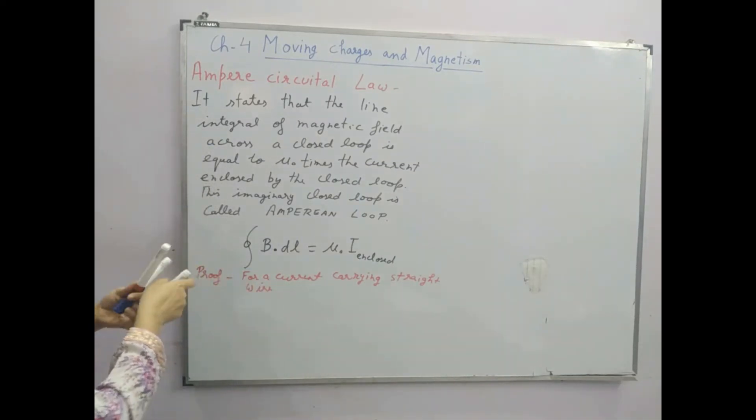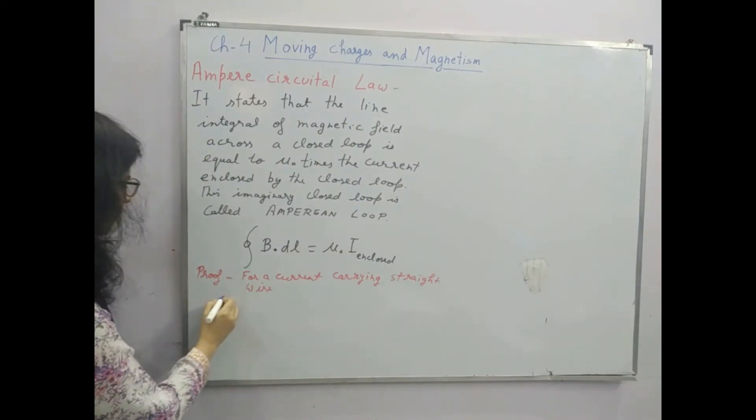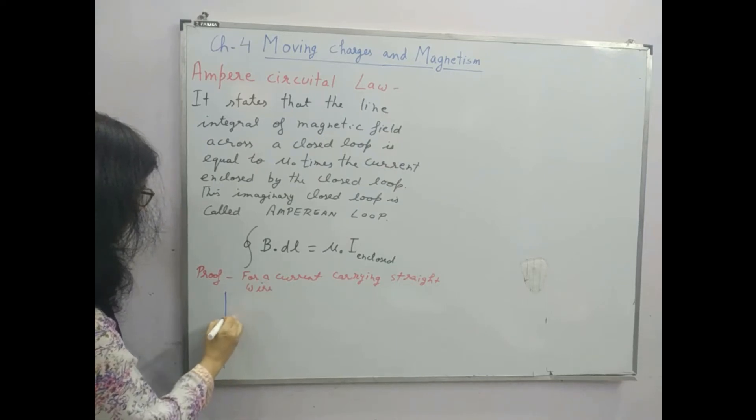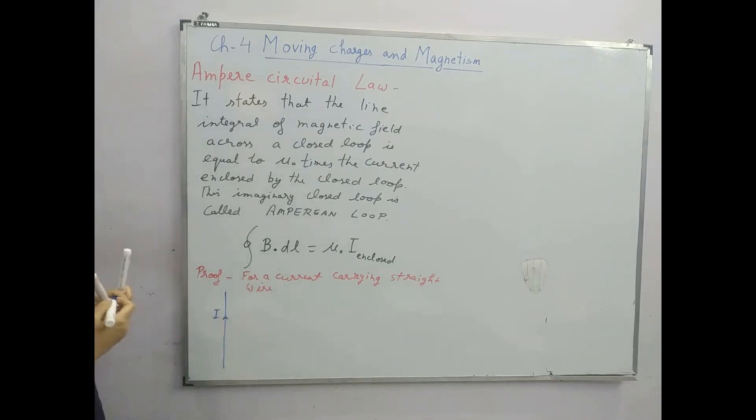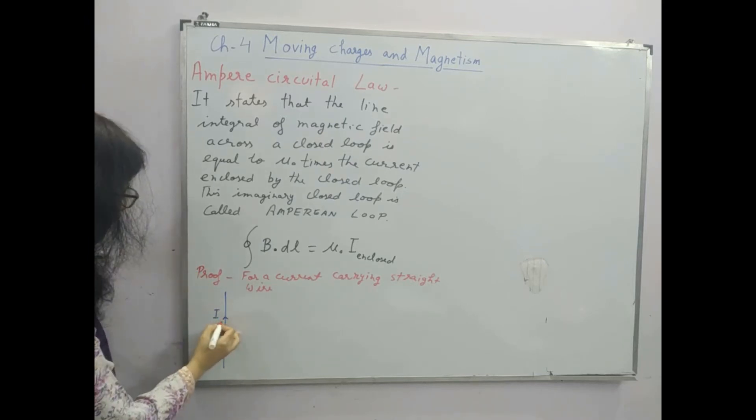Let's consider a straight current carrying wire carrying current I, and let's imagine an Amperean Loop around this current carrying wire. This will be obviously circular because we are imagining it to be circular here.